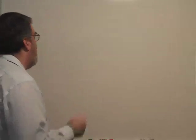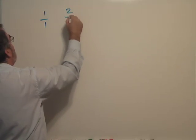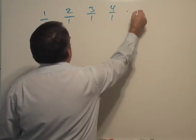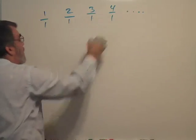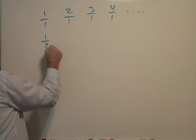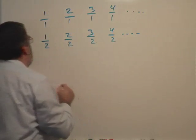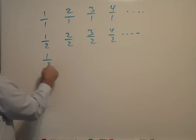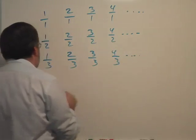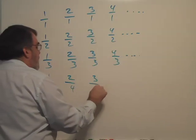Cantor came up with this idea. He said, let's arrange the fractions this way. In the top row, we'll put all the whole numbers, numbers with denominators of one: 1, 2, 3, 4. In the second row, we'll put all the fractions with a denominator of two: 1/2, 2/2, 3/2, 4/2. The third row will have three as a denominator: 1/3, 2/3, 3/3, 4/3. And the fourth row: 1/4, 2/4, 3/4, 4/4.